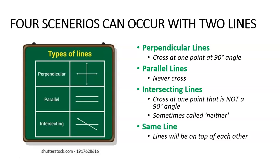They can be intersecting lines, which means they will cross at one point that is not a 90 degree angle. Sometimes they call these neither, or the two lines could actually be on top of each other and are actually the same line.